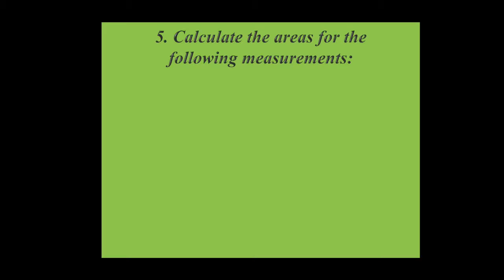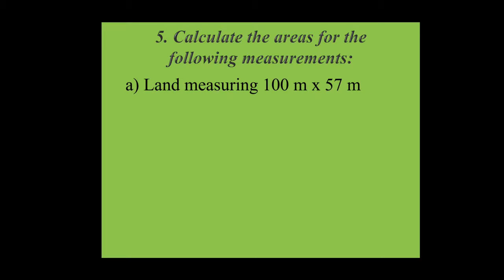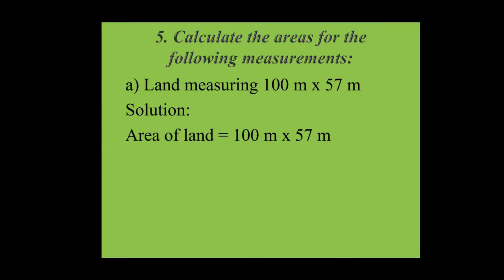Now we are going to question number 5: calculate the areas for the following measurements. Look at question A — length measuring 100 meters multiplied by 57 meters. To solve these types of problems, we need to know the formula for area: Area = length × breadth. Here, length and breadth are already given, so we just multiply. Area of land = 100 m × 57 m = 5700 square meters.